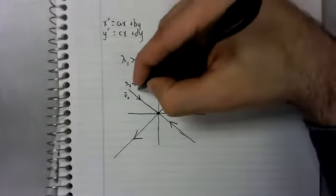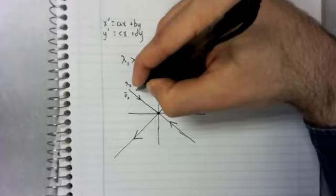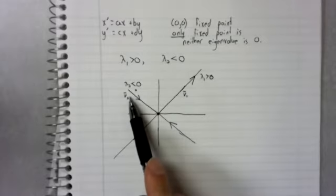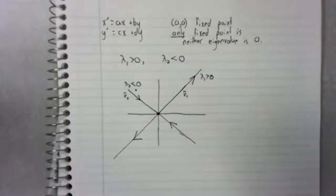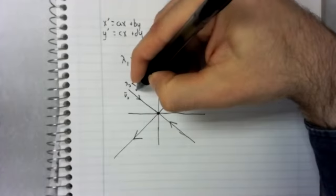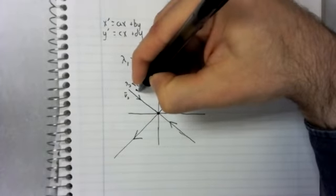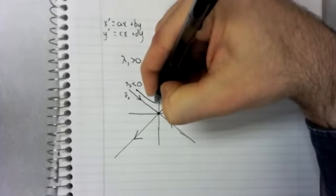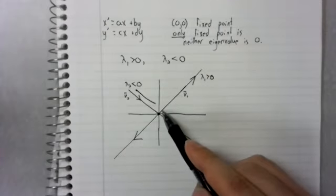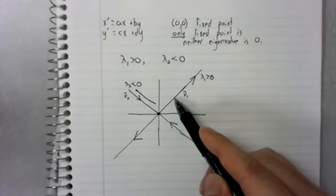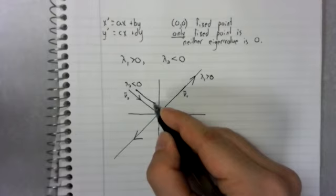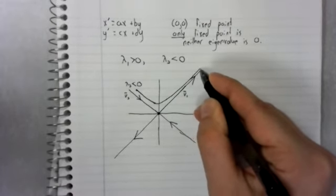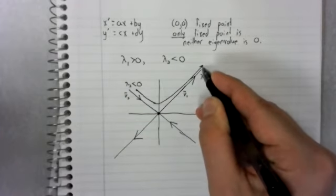What if we start near this eigenvector, but not on it? Well, initially, you're sort of pulled along by the negative eigenvalue, but when you get near this eigenvector, you get pulled along by it, away from the origin.